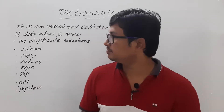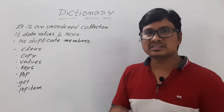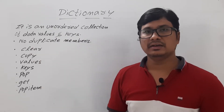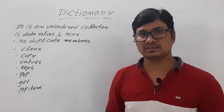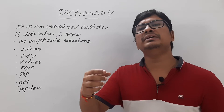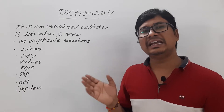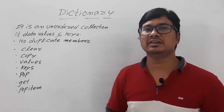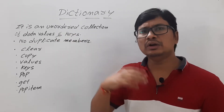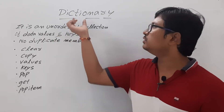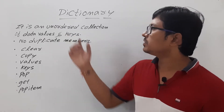First let me define what is a dictionary. It is an unordered collection of data and keys. The dictionary is a collection of key and value pairs. If you talk about the list and tuple, we can access an element with the help of the index, and the index values will always be integers starting from zero up to n minus 1. But here I want to access elements with the help of keys, so I can use the dictionary. The keys can be any data type — integer or character.